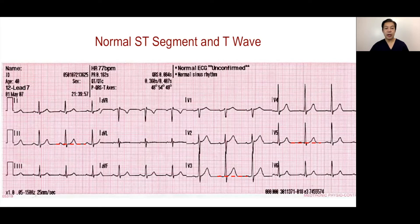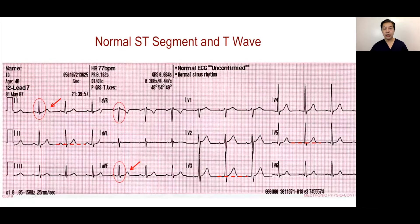In general, the T-waves will have a polarity similar to the net polarity of the QRS deflection. So if lead 1 has a net positive polarity, T-waves should be positive as well. That is similar with AVF, hence a positive T-wave in AVF, which is normally positive. AVR, on the other hand, records a net negative QRS, hence a negative T-wave. The lateral pre-cordial leads record positive T-waves as well.